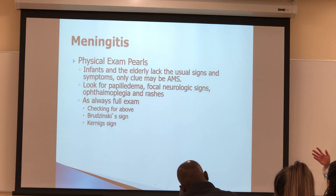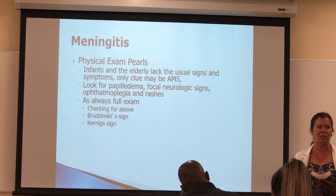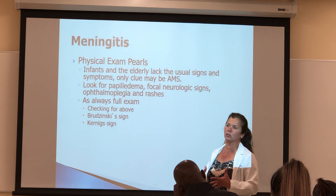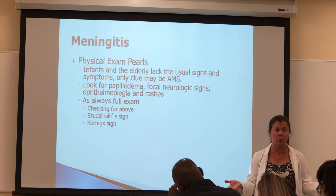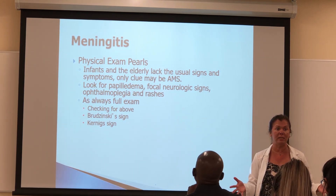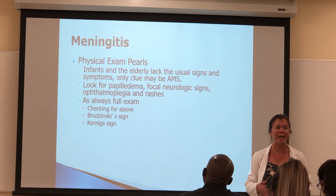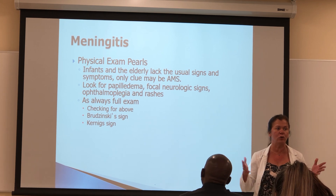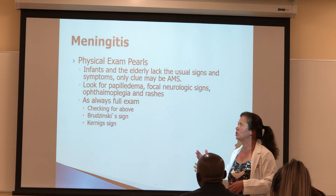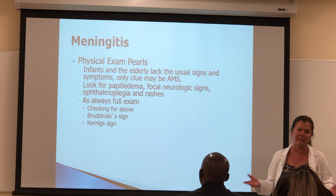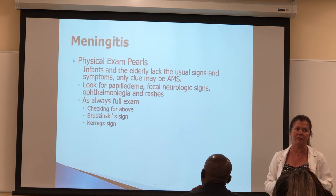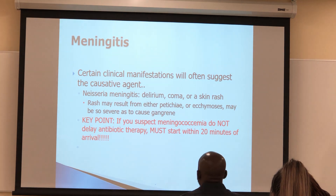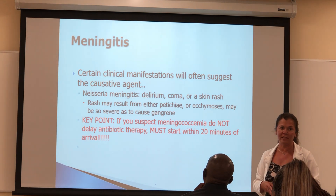Pediatric patients, elderly patients, alcoholic patients, and immunocompromised patients are those at risk for Listeria — cover them. Look for signs and symptoms of focal neurological deficit, which include the same signs as a stroke: hemiplegias, hemiparesis, alteration of any cranial nerve, papilledema, or on CT scan seeing midline shift, choroid plexus edema, hydrocephalus, or compromise of the third ventricle. Kernig and Brudzinski are also signs. Nuchal rigidity itself is a sign of non-focal neurological deficit — those patients must have CT brain before lumbar puncture.